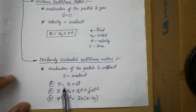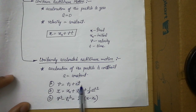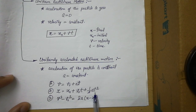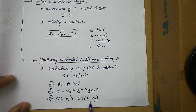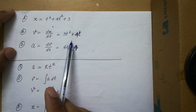To define the variables: v is the final velocity, v₀ is the initial velocity, a is the acceleration, t is the time taken in seconds, x is the final distance, and x₀ is the initial distance. In the older notation, s is the final distance.